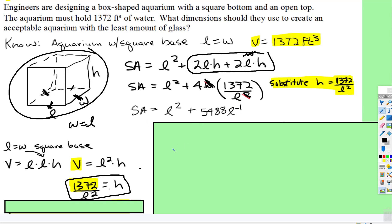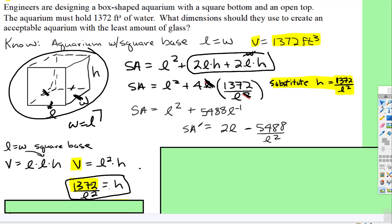And now I'm going to find the derivative. So the derivative of the surface area, this is 2L, and then this is going to be negative 5488 L to the negative second, and we can rewrite it back as L squared in the denominator. And now I'm going to set both sides equal to 0.